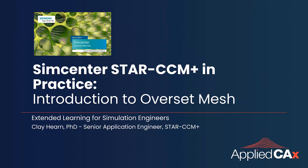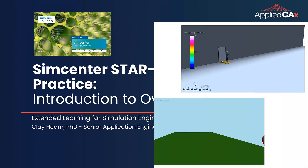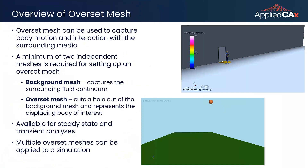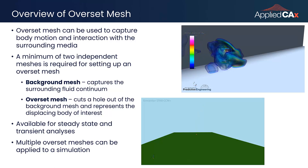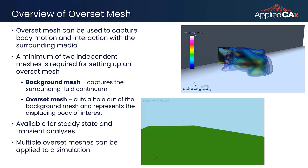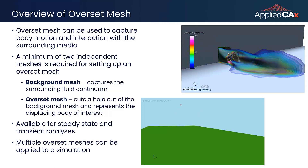Hello, this is Clay Hearn with Applied CAX, and today we will introduce the Overset Mesh Method in Simcenter Star CCM+. The Overset Mesh is a method that can be used to capture motion and body interaction in a CFD simulation.